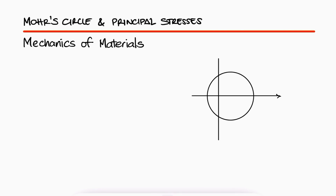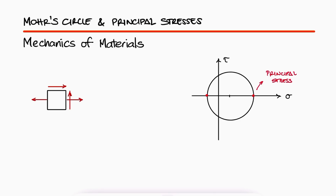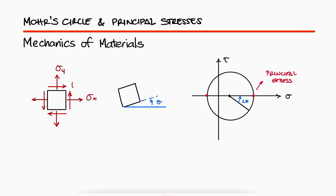Mohr's Circle is a graphical representation method to find the principal stresses of a stress element subjected to a specific stress state and the angle at which they are found. A 2D stress element at any location inside a structure is characterized by the stress components σx, σy, and τxy. These are typically caused by some or all the stress types we have studied in the previous videos up to this point.